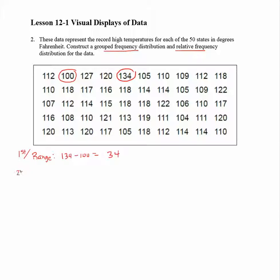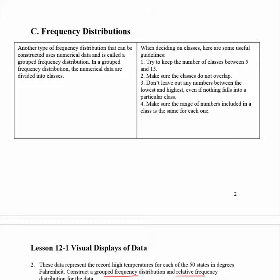Second, we have to pick an appropriate number of classes for the data. So if we look at the steps for deciding on classes for frequency distribution, we want to try to keep the number of classes somewhere between 5 and 15. You don't want to create a frequency distribution that's too small or too large. Make sure none of the classes overlap each other.